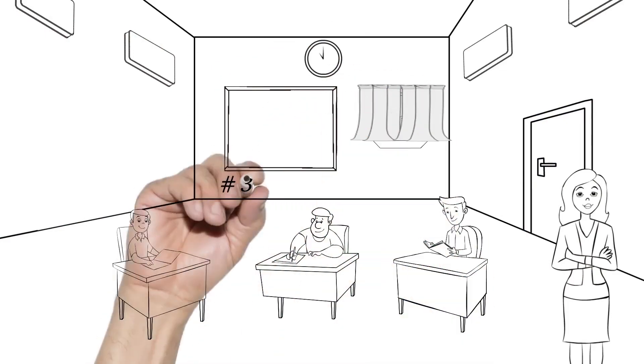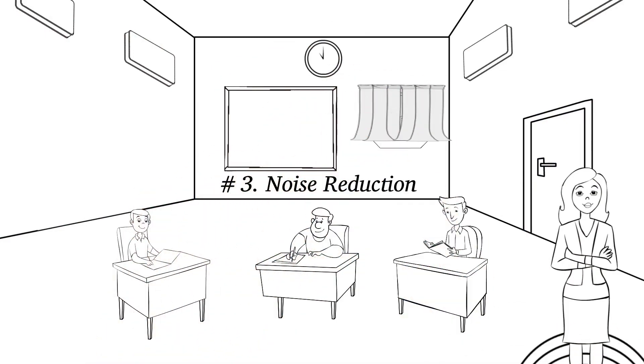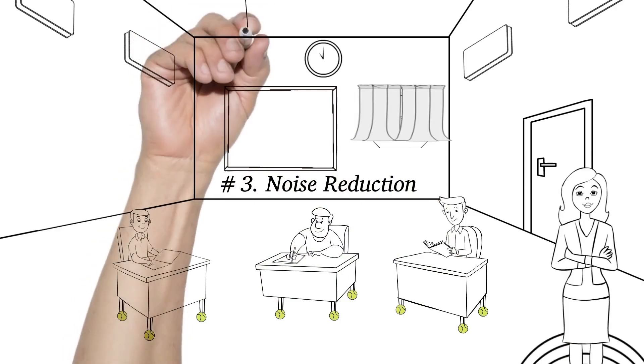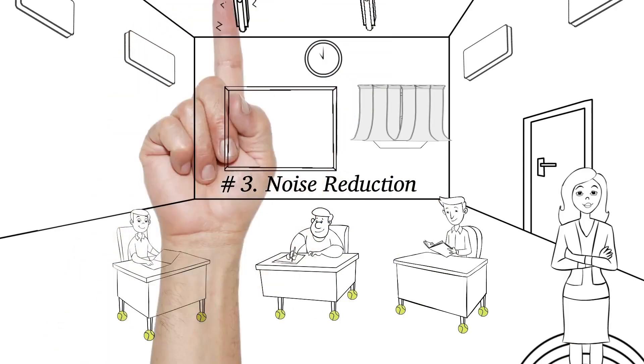Noise reduction involves placing a rug under the teacher where they instruct, covering the bottom of the desks, tables, and chairs, and replacing buzzing ballasts of fluorescent lights immediately.